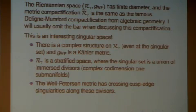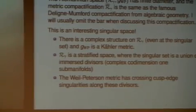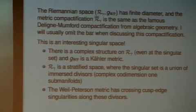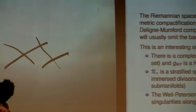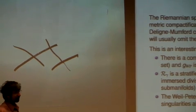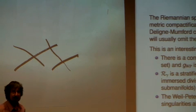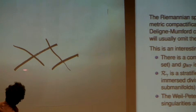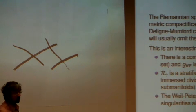This is a stratified space, and the strata are rather simple — they look like divisors, i.e., complex hypersurfaces which intersect one another. The picture to take away is that you have some sort of space with singularities along complex hypersurfaces called normal crossing divisors. The Weil-Petersson metric has so-called crossing cusp-edge singularities along those divisors. Along the divisor in the transverse direction, it's not looking like a cone — it's looking like a cusp. You have roughly what looks like a product of a cusp crossing with a smooth space in that direction, and when these divisors cross, it looks like products of cusps.